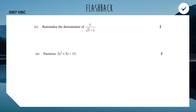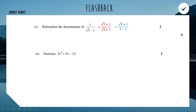Starting with the first one: to rationalize, we multiply the top and bottom by the conjugate, which is root 3 plus 1. On top we get root 3 plus 1, and on the bottom we use the difference of two squares shortcut — root 3 squared minus 1 squared — which gives us a 2 on the bottom for the final answer.